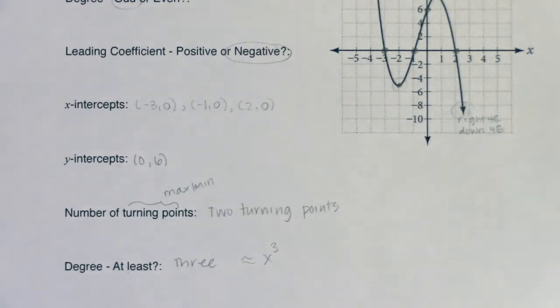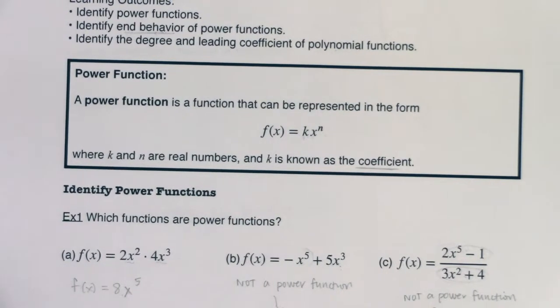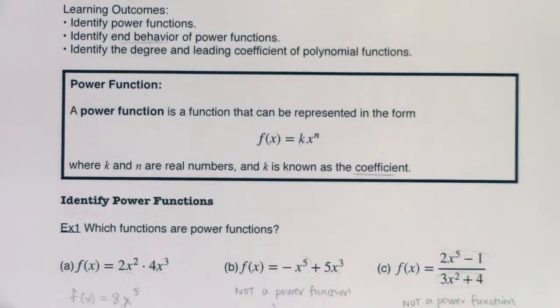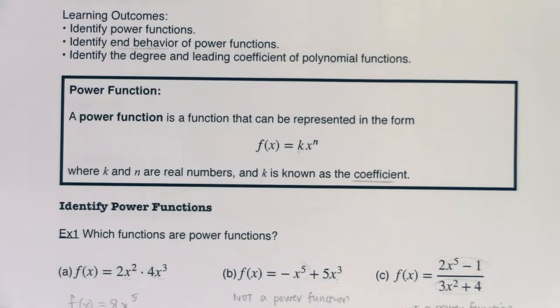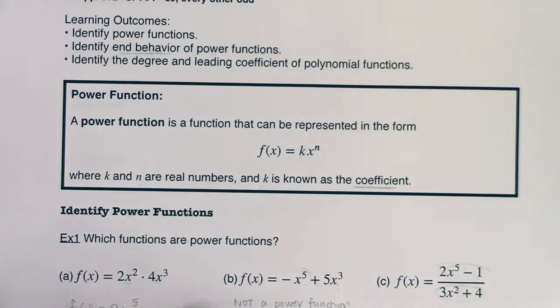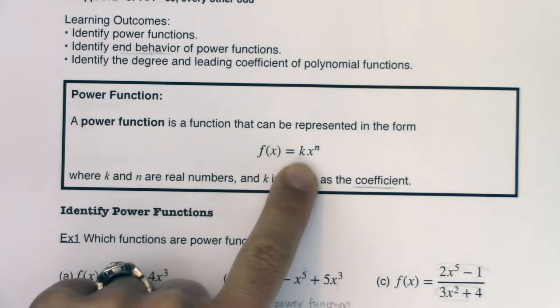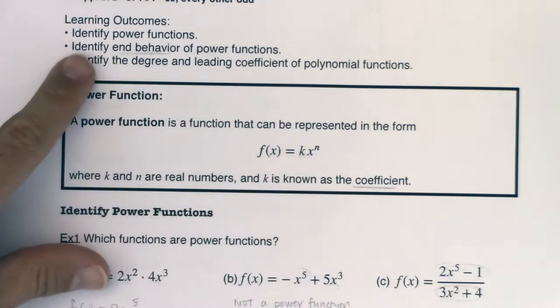So now that we're at the end of this, I want to show you what we should have under our belts. So we should be able to identify power functions. And I know it's been a little while, but a power function is just one term. It's a monomial. It's got a coefficient k and a power on x of n.